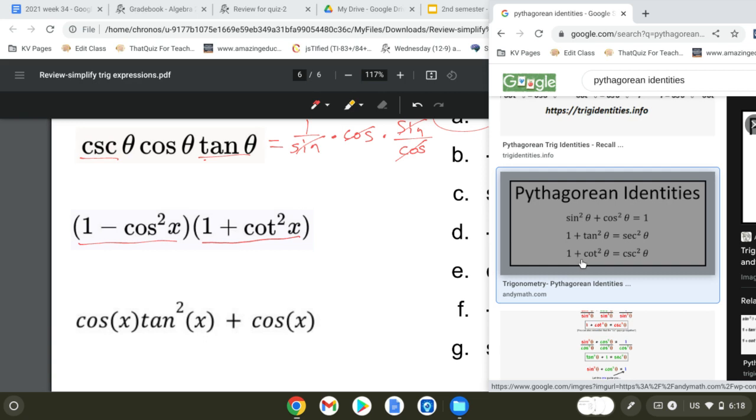Oh, yeah. 1 plus cotangent squared is cosecant squared. This is definitely the strategy.